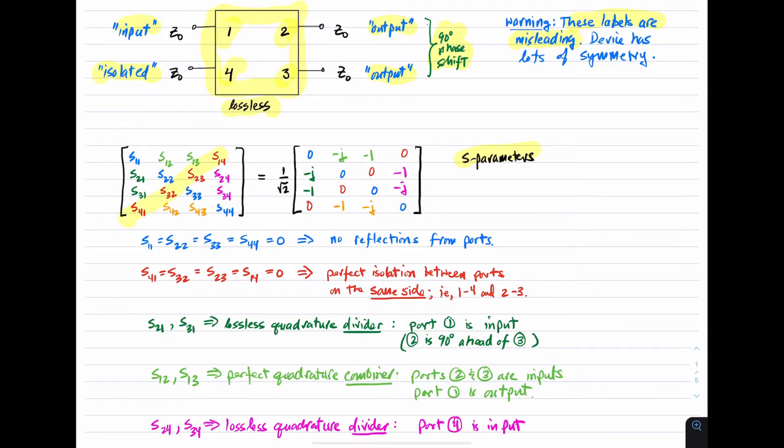Now, these four S-parameters, which I'm highlighting now, have to do with isolation. These are S41 and S32, S23, and S14. The fact that these are all zero for the quadrature hybrid says that we have perfect isolation between ports which are on the same side, that is, between ports one and four and ports two and three. So in other words, if we were to use this as a divider with the input being port one, then we know that port four would be isolated.